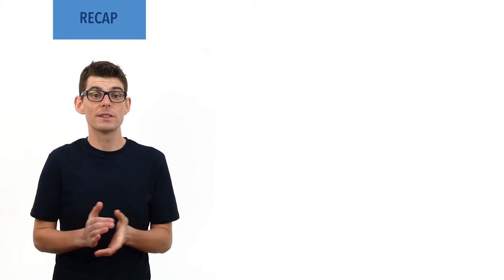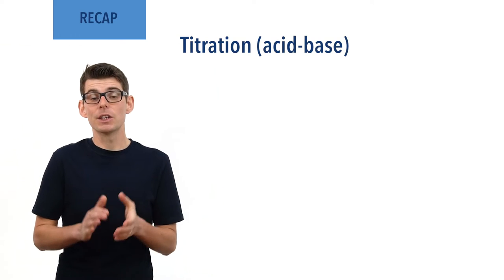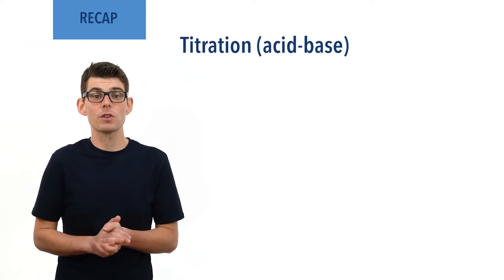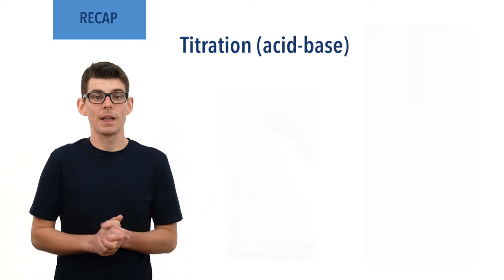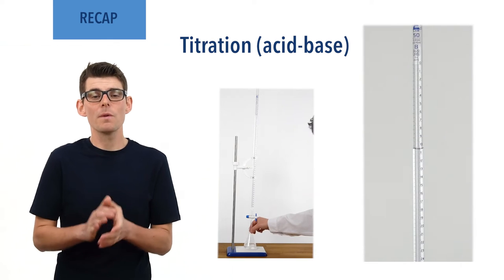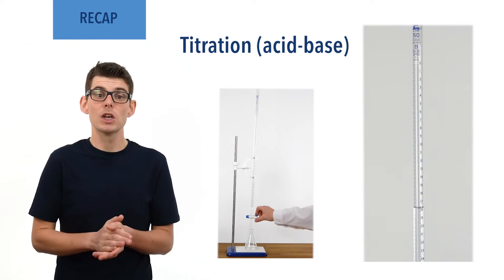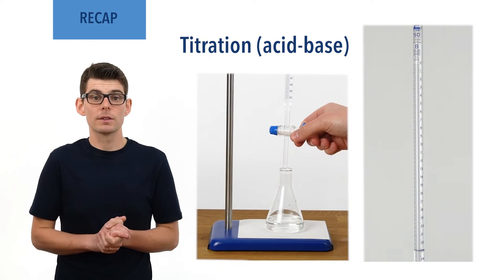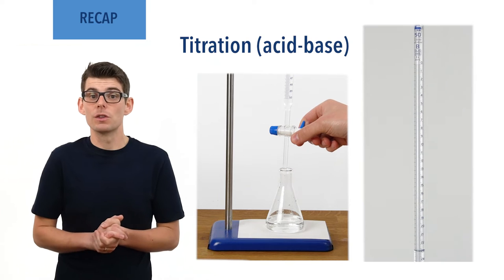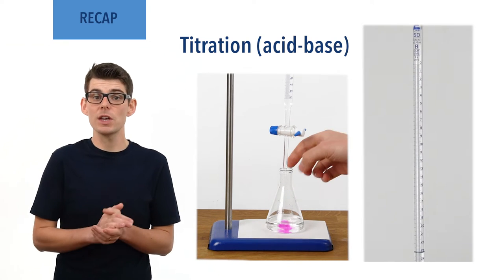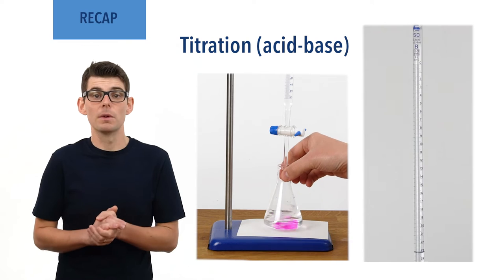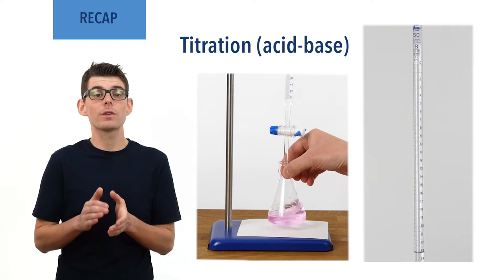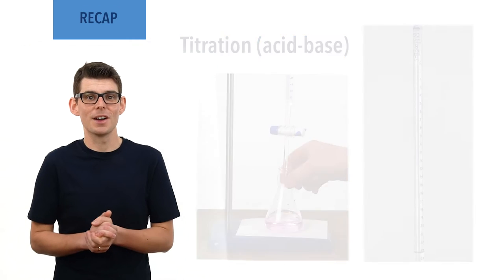Before we talk in detail about pH curves, there are a few essential ideas you need to be comfortable with. A titration is a practical technique that can be used to find the concentration of a solution of an acid or base. An acid or base solution with a known concentration is added from a burette to a base or acid solution with an unknown concentration in a conical flask. An indicator changes color when the pH of the solution suddenly changes, and we use the volume of acid or base added at this point to find the concentration of the solution initially in the flask.